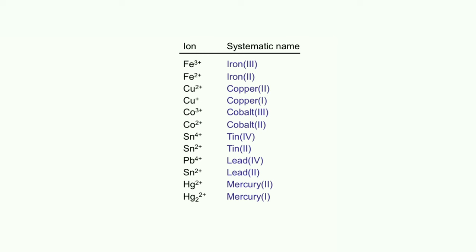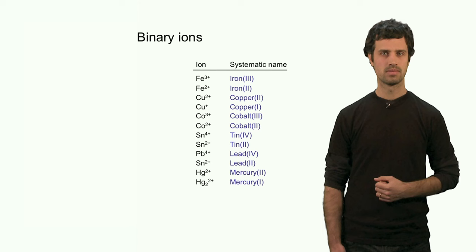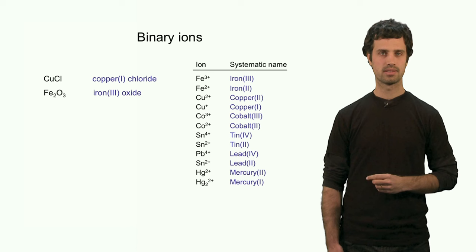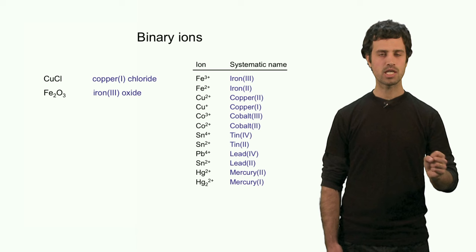Here is a list of common Type 2 cations and their systematic names. Let's look at a couple of examples of Type 2 ionic compounds. For instance, copper(I) chloride is called copper(I) chloride. Why is it a 1 and not copper 2? That is because the chlorine has charge minus 1, which means to make a neutral compound it must be copper 1 plus.